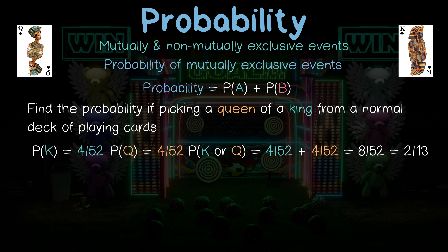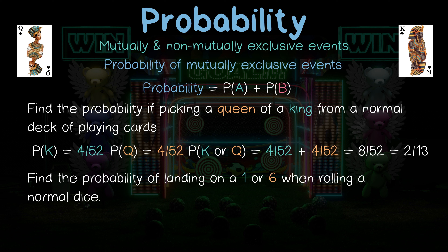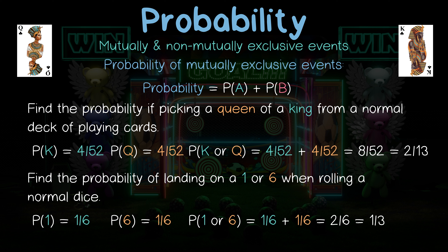You roll a dice. What is the probability that it will land on 1 or 6? Landing on 1 is 1 out of 6, and landing on 6 is going to be 1 out of 6. If we add them together, we get 2 over 6, which gives us 1 third, or as a decimal, our probability is 0.33 recurring.